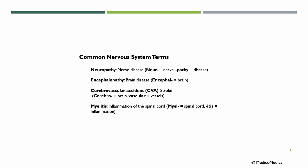Some common nervous system terms: neuropathy — nerve disease, combining nerve and '-pathy.' Encephalopathy — 'encephal' meant brain, '-pathy' comes from pathology, so brain disease. Cerebrovascular accident means stroke — 'cerebro' is brain, 'vascular' means vessels, so an accident of brain vessels; essentially, stroke. Myelitis — inflammation of the spinal cord.